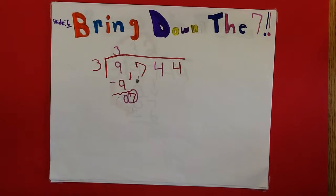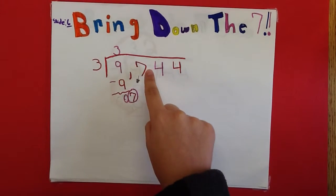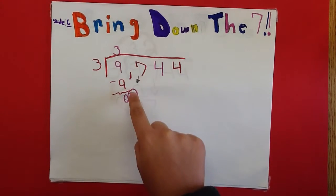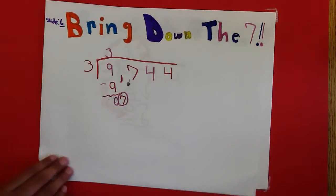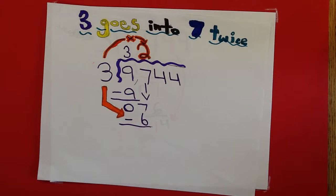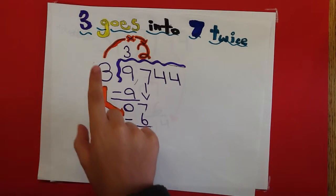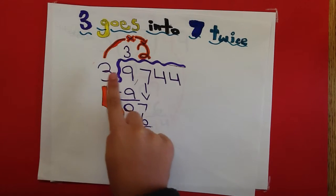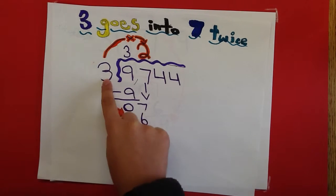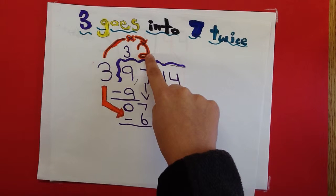Bring down the digit right next to the 9 which is 7 and put it next to the 0. Now you see how many times 3 goes into 7. 3 goes into 7 twice. So write a 2 above the 7.